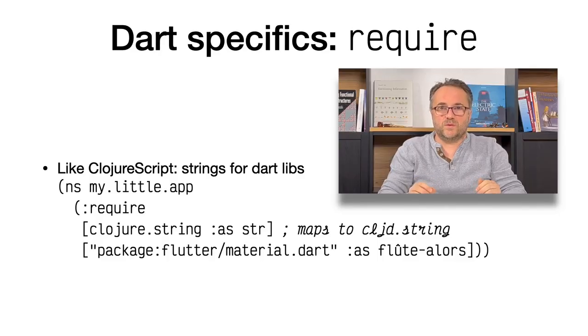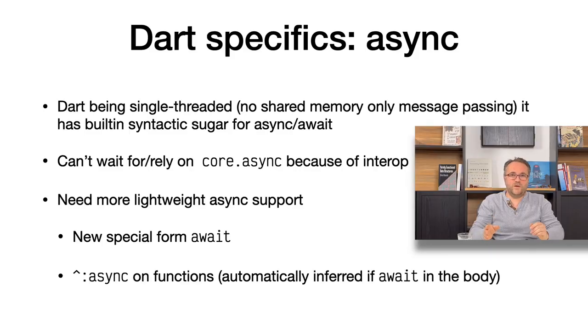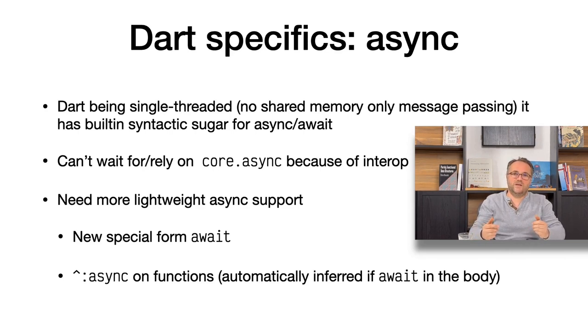Another thing about Dart is how do we require a Dart lib from a namespace. Here we chose to do it in the same way that ClojureScript does — if the namespace is denoted by a string, then it's going to be a Dart lib. Another thing which is important in Dart, because it's leveraged by a lot of APIs, is that Dart has built-in support for async and await. The first reaction was okay, we've got core.async. But core.async is a world on its own and has no good interop story. Here we have something built into the language and the standard library, so we need to offer something low-level to be able to leverage that async feature. It's pretty simple — we introduced a new special form, `await`.